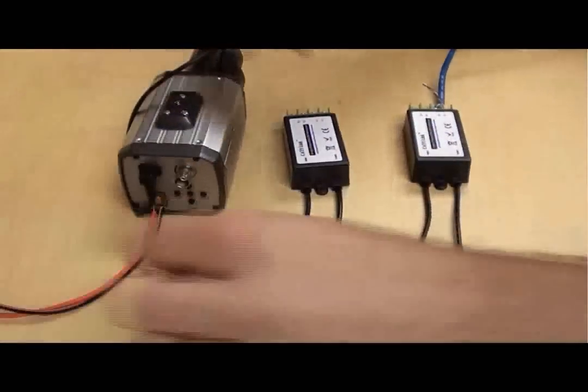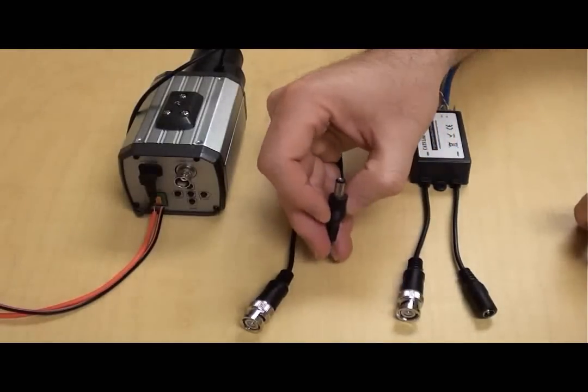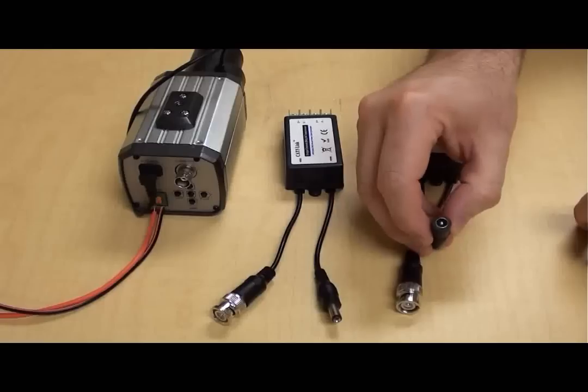Each of the PV5FM video balun sides has a male BNC video connector. One of the sides has a female power lead and the other side has a male.